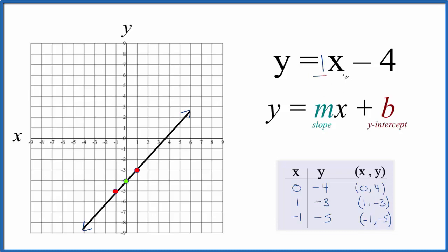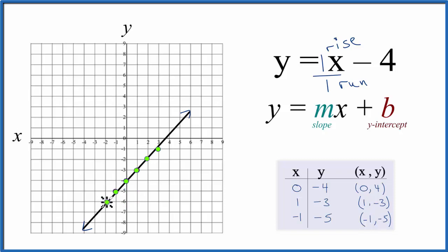If we think of the slope as a fraction, 1 over 1, we can say rise over run. So we go to the y-intercept, rise 1 and go over 1 — and there's a point on our line. We can keep doing this, and all these points are right on our line. Likewise, we can go down 1 and over 1 in the opposite direction, and all those points also land on our line y equals x minus 4.